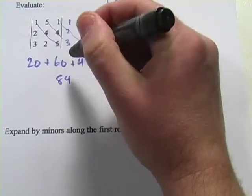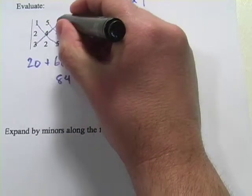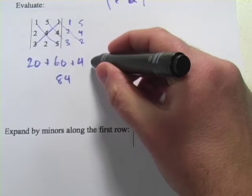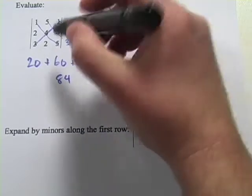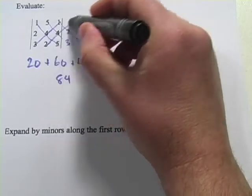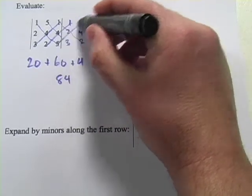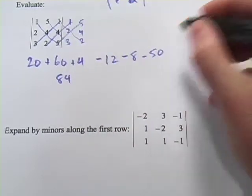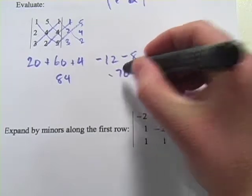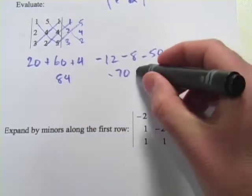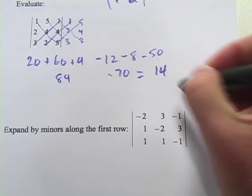Now we're going to subtract our up diagonals. So I'll start here. 3 times 4 times 1, that's minus 12. 2 times 4 times 1, that's minus 8. And 5 times 2 times 5, that is minus 50. So that adds up to minus 70. So this is 84 minus 70, or 14 for your determinant.